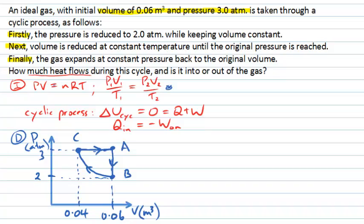How does this help us find the heat that flows? If we can calculate the work done, then the negative of that will be the heat. From our PV diagram, the work done on the gas equals the negative of the integral of pressure with respect to volume — that is, the area under the pressure-volume curve. We have all the information needed, so we can calculate the work for each stage and therefore find the total heat.